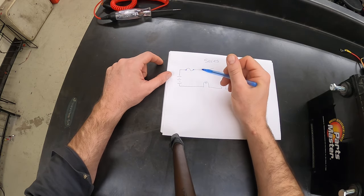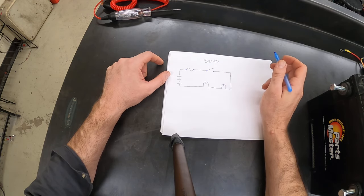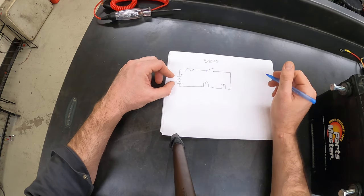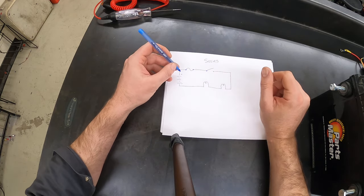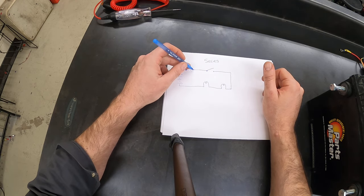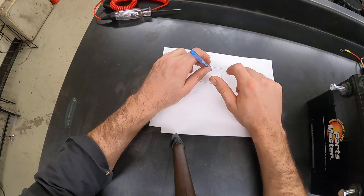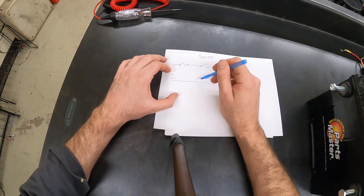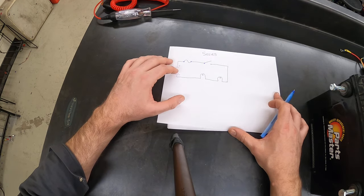What makes this a series circuit is that there's only one path for the electricity to flow from the positive of the battery to the negative of the battery. So power is going to leave the battery and travel through the fuse, through the switch, and then it's going to go into one light bulb and light that light bulb, then go into the other light bulb and light that light bulb.